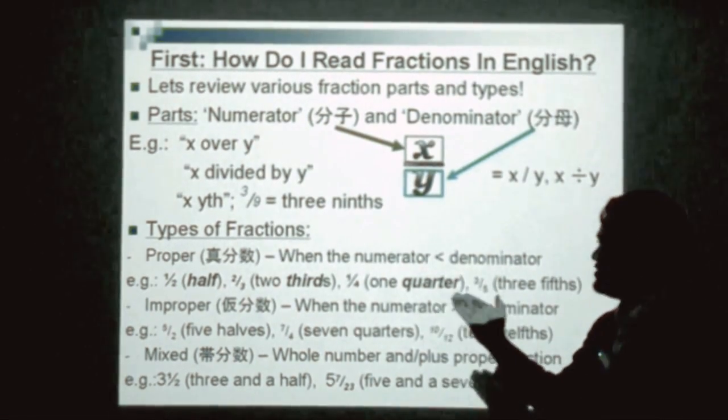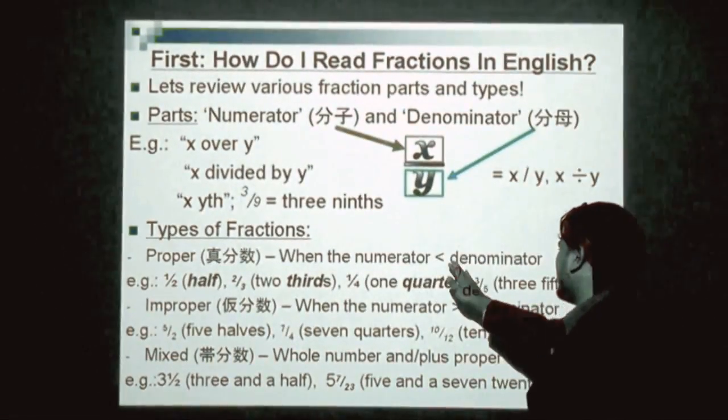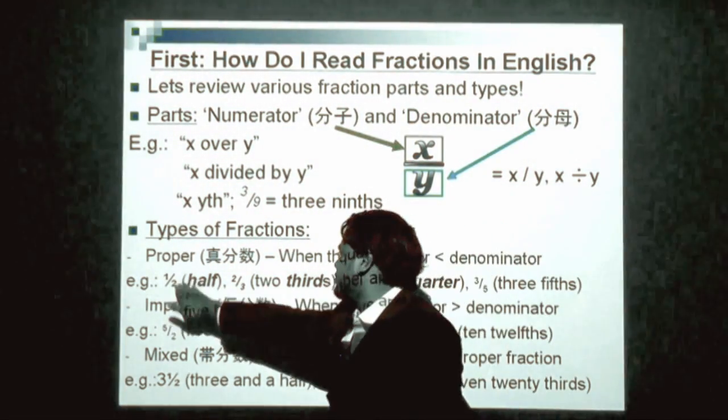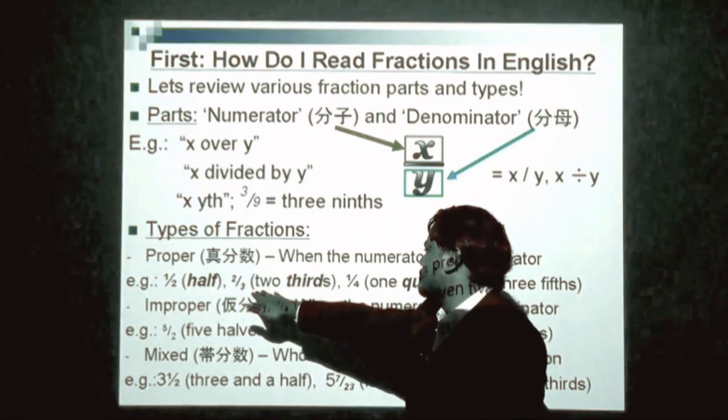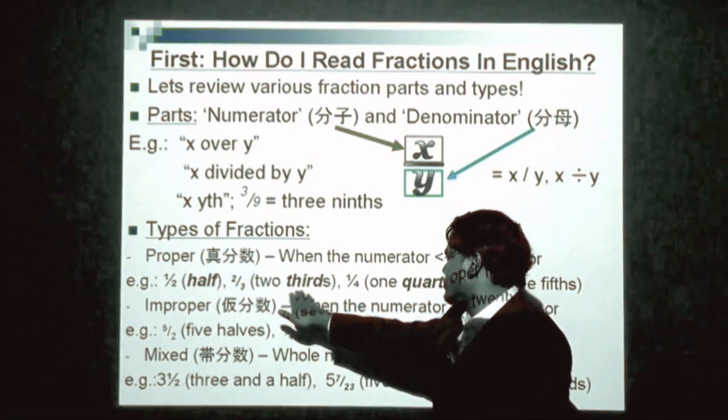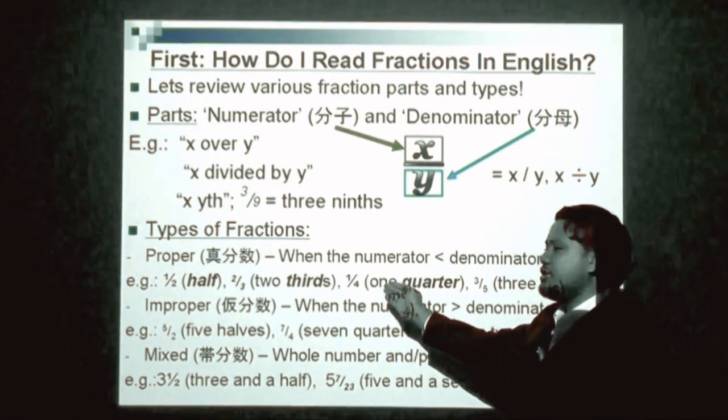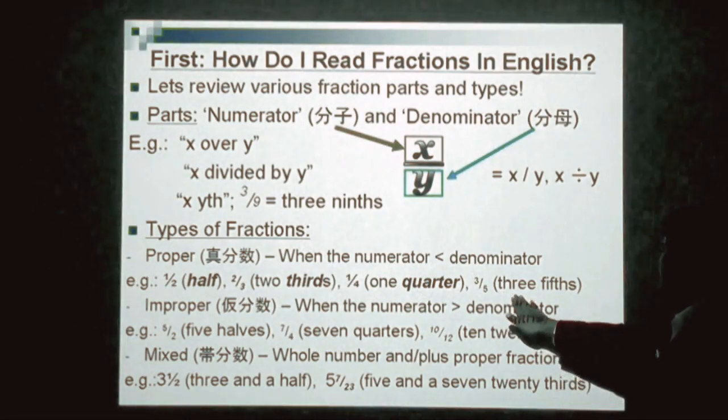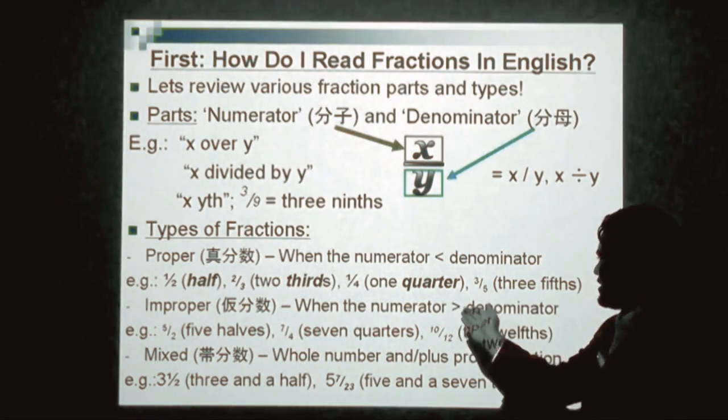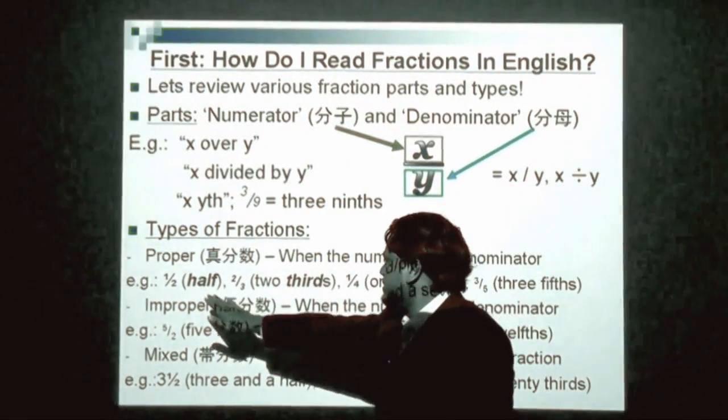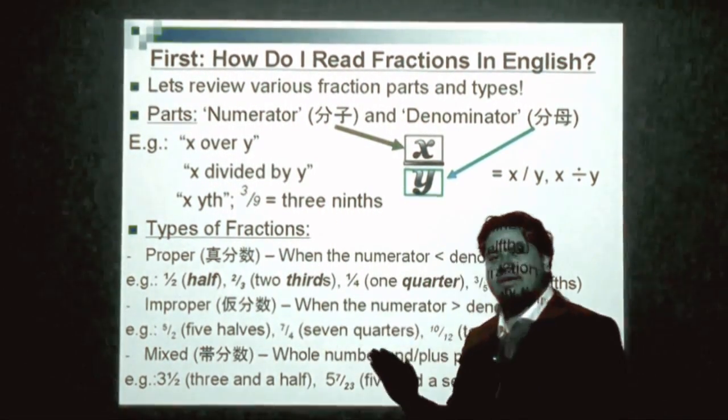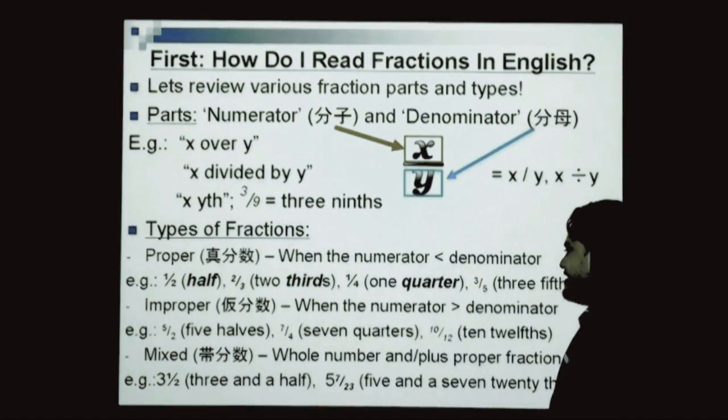Proper fractions are when the numerator is smaller than the denominator. I have examples here: 1 over 2, a half; 2 over 3, 2 thirds; in other words, 1 over 4, or 1 quarter; and 3 over 5, or 3 fifths. If you look carefully, a denominator with 2, 3, or 4 are very special.